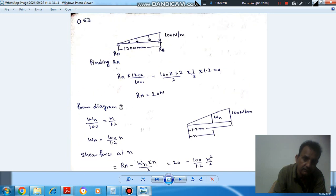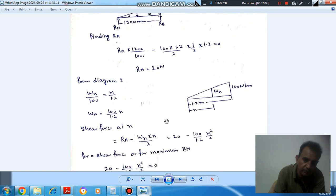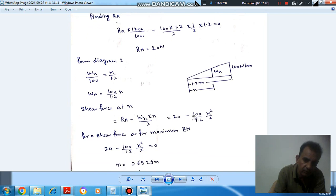Then the shear force is Ra minus this load. So this load here has intensity wx, which is wx into x by 2, and wx is 100 by 1.2 into x. So it will be 20 minus 100 by 1.2 into x squared by 2.